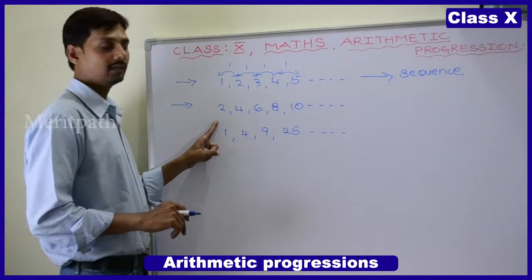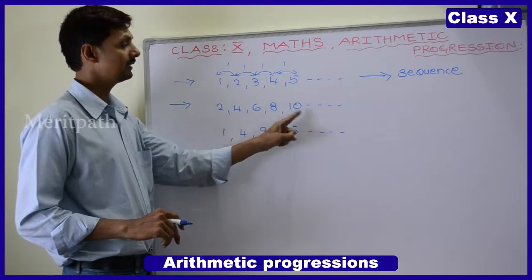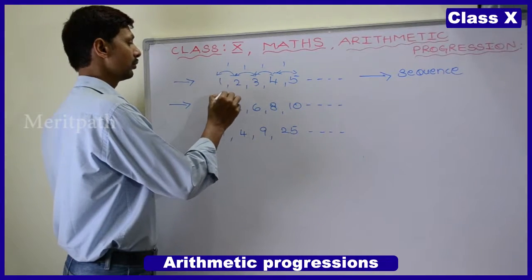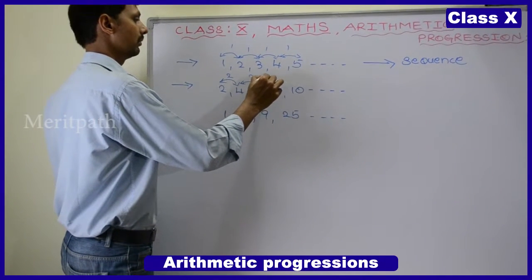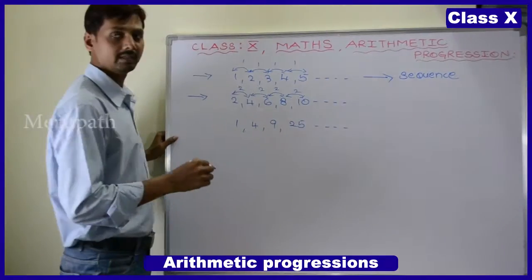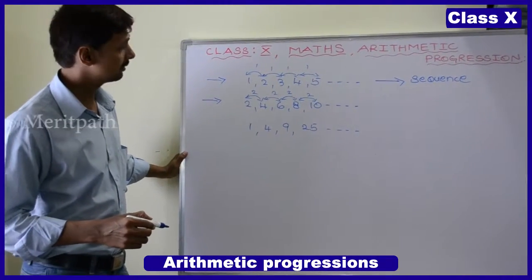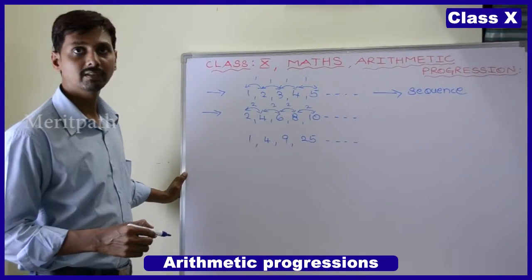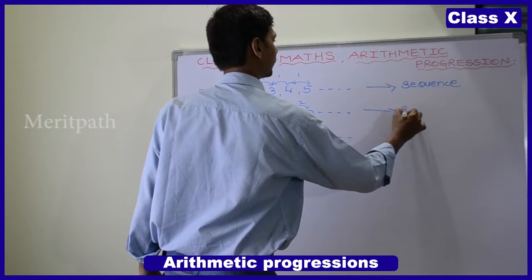And if we see the second pattern, 2, 4, 6, 8, 10 — in these numbers, the difference between two consecutive numbers is 2. And again 2, and also 2. So here we can observe the difference between the two numbers is 2. This is also following a rule, so this is also a sequence.